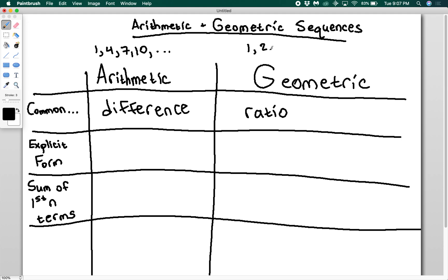So something like 1, 2, 4, 8, 16 would be a geometric series. 16 over 8 is 2, 8 over 4 is 2, 4 over 2 is 2, 2 over 1 is 2. So that's the difference between arithmetic and geometric series and what each of them is.